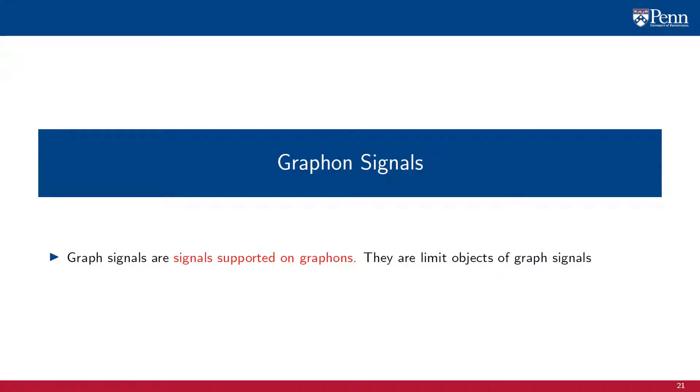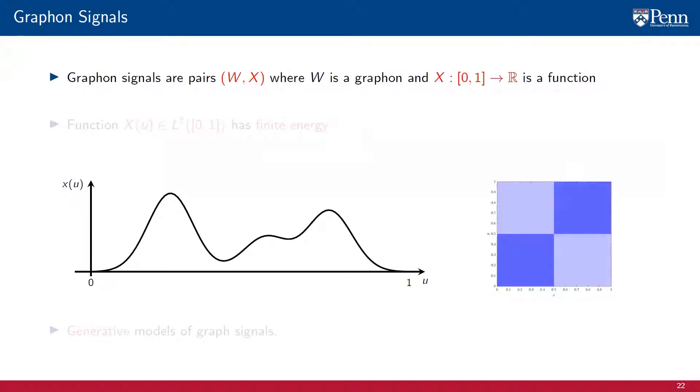In this section, we introduce the concept of graphon signals. Graphon signals are signals supported on graphons and their value lies in that they are limit objects of graph signals. A graphon signal is a pair (W, X) in which W is a graphon and X is a function mapping the unit interval to the real numbers.